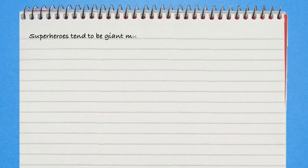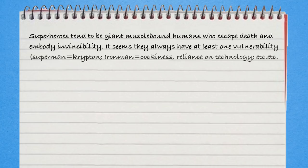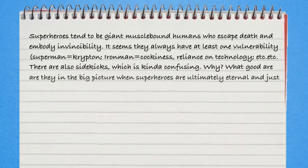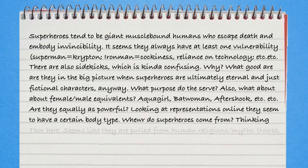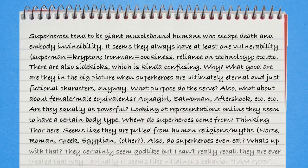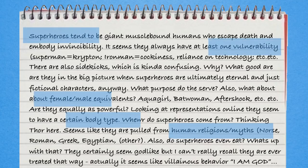The last technique we'll cover is freeforming or pre-writing. Simply take some time and write continuously on your topic without worrying about spelling or grammar. After 10 to 15 minutes, you'll see what you know and don't know about a topic. From there, narrow your scope.